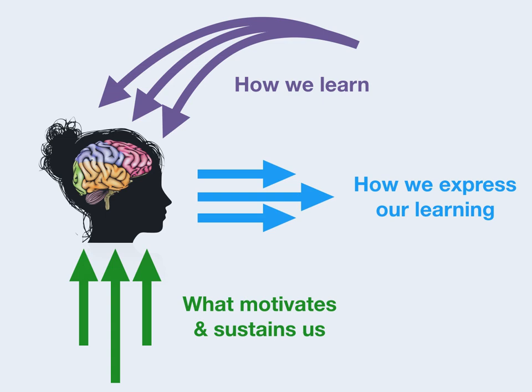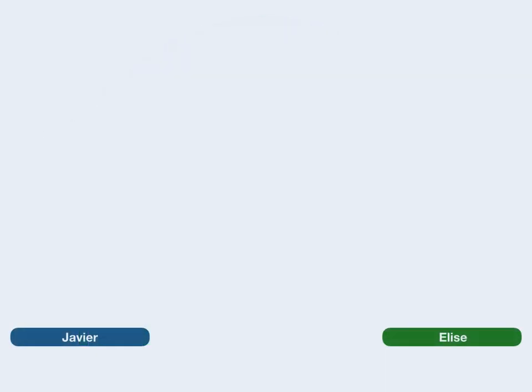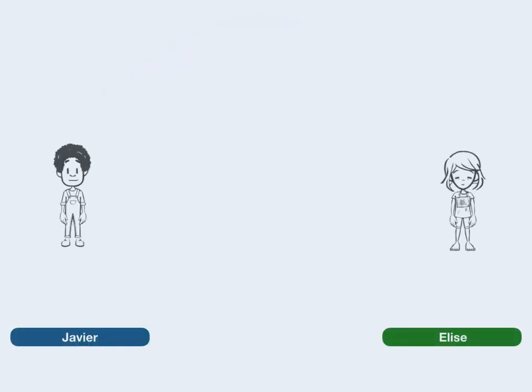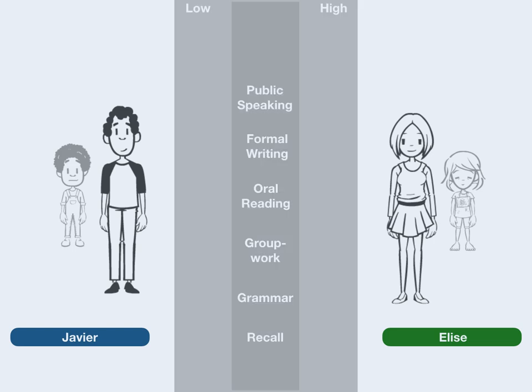When learning new things, we bring to the task the sum of our life experience. All learners are skilled in some areas while struggling in others. Being good at one thing doesn't presume a deficit or a strength in another.